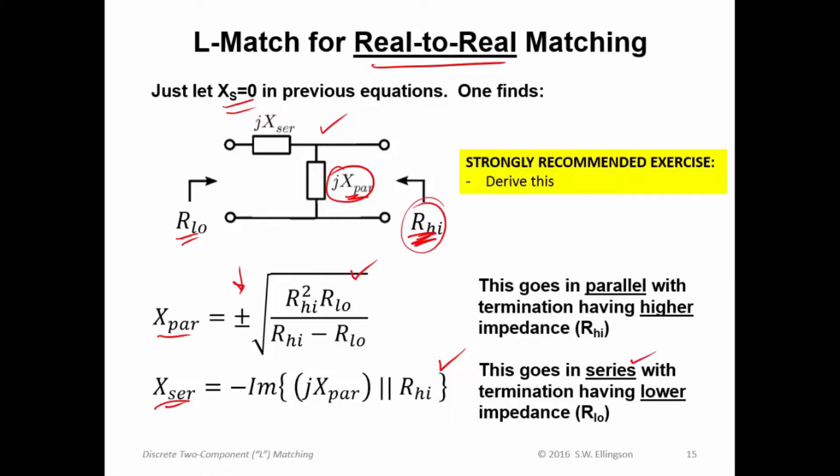Again, I strongly recommend you derive this. You can do it one of two ways. You can either start with this circuit and just derive the equations, or you could take the equations that we derived previously and simply set X_s equal to zero. Either way, it should give you the same solution.